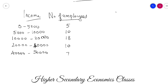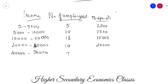The first step is midpoints. To find midpoints, you use lower limit plus upper limit divided by 2. This is not a class interval. The midpoints are: 2,500, then 7,500, then 15,000, then 30,000, then 45,000. Okay, these are the midpoints.